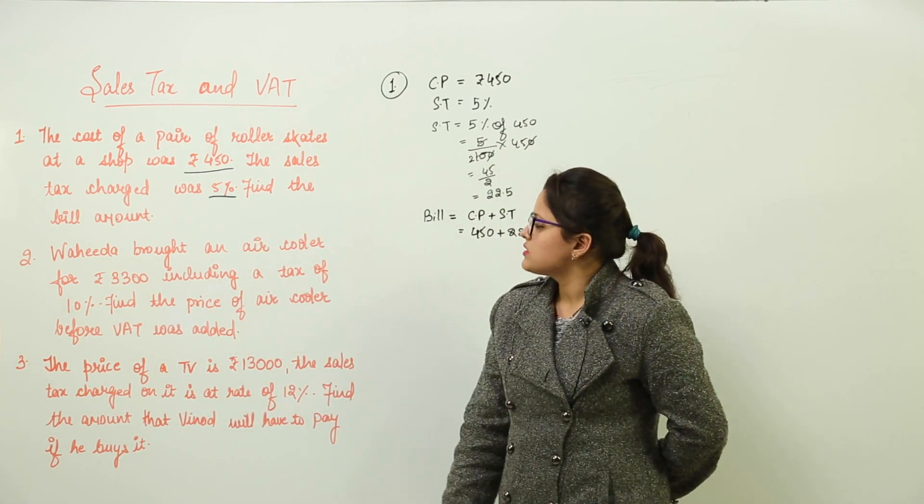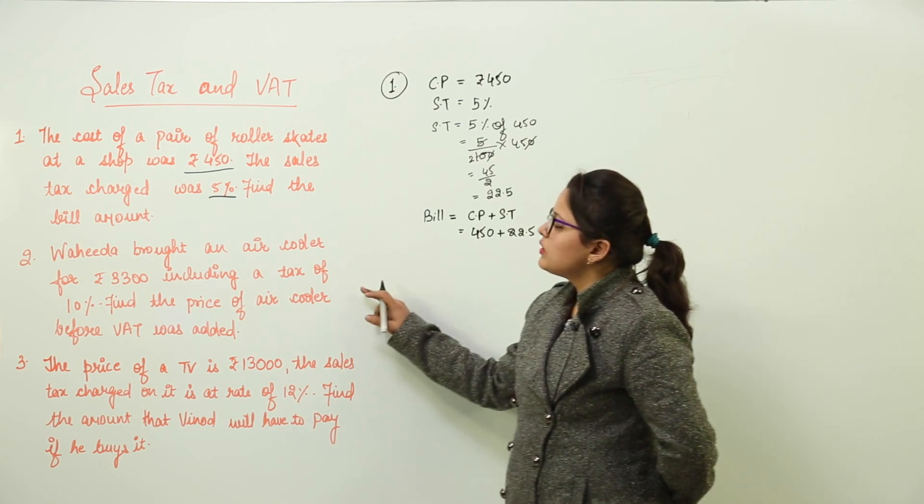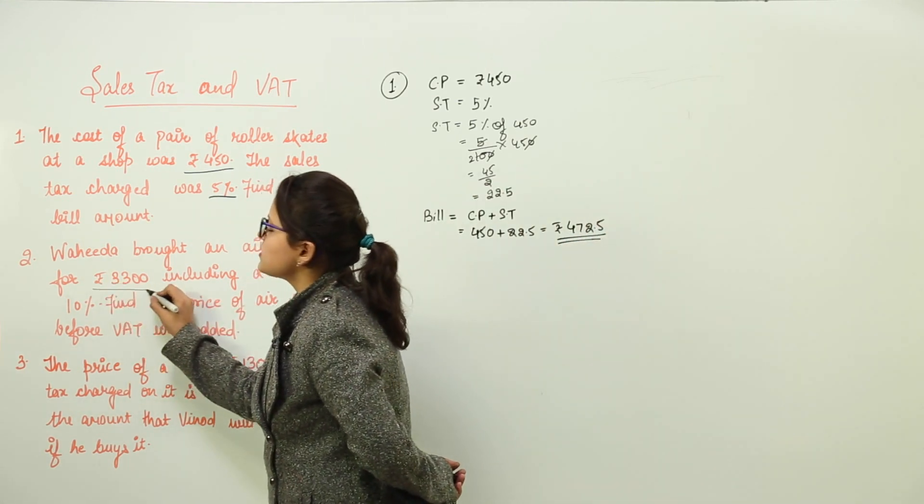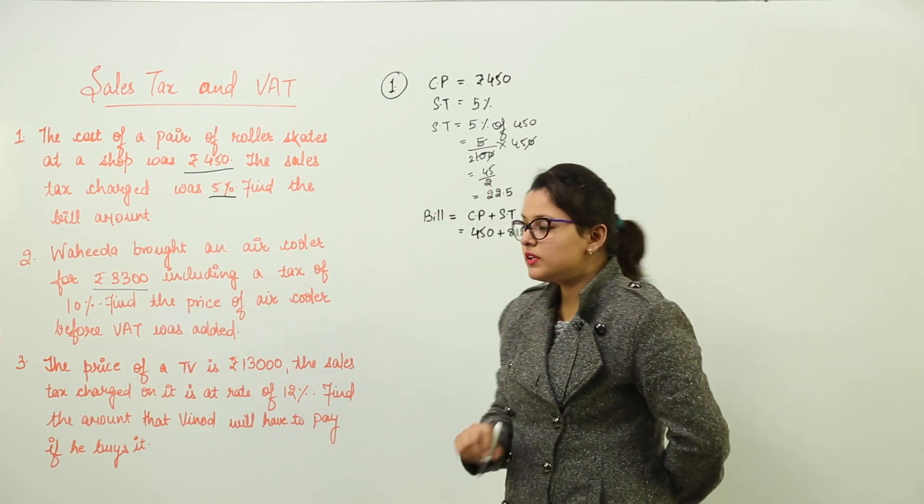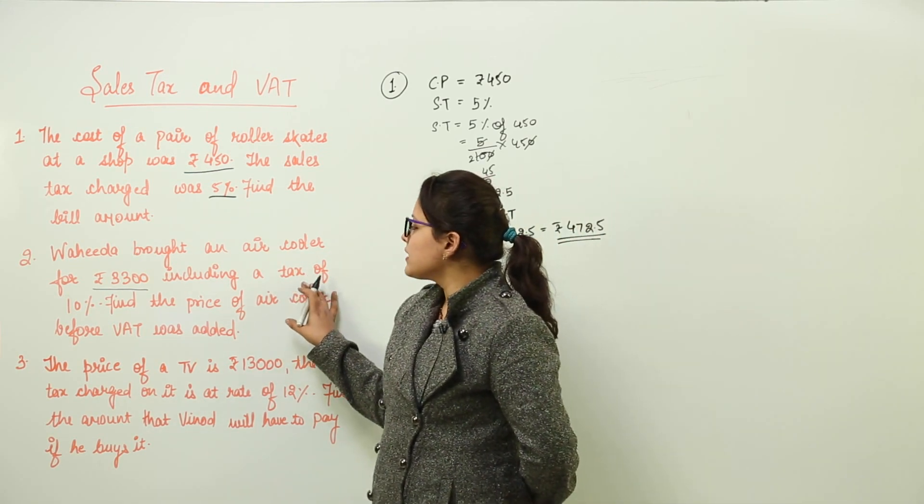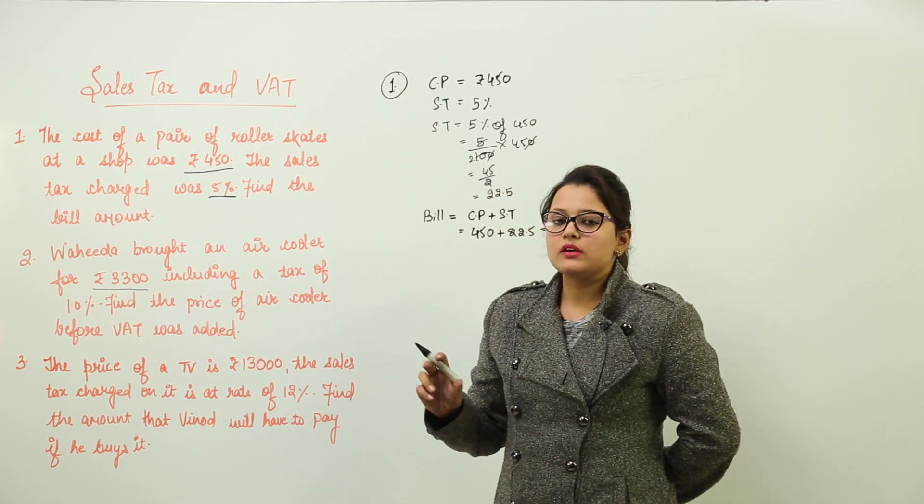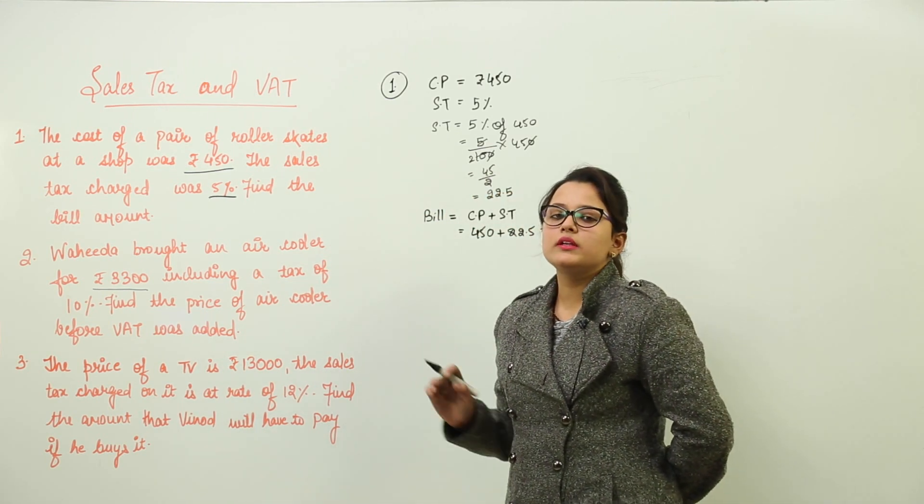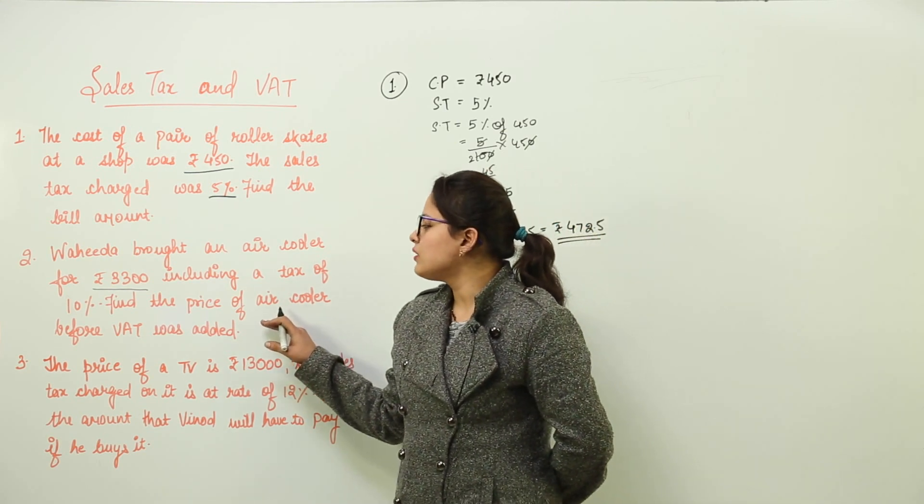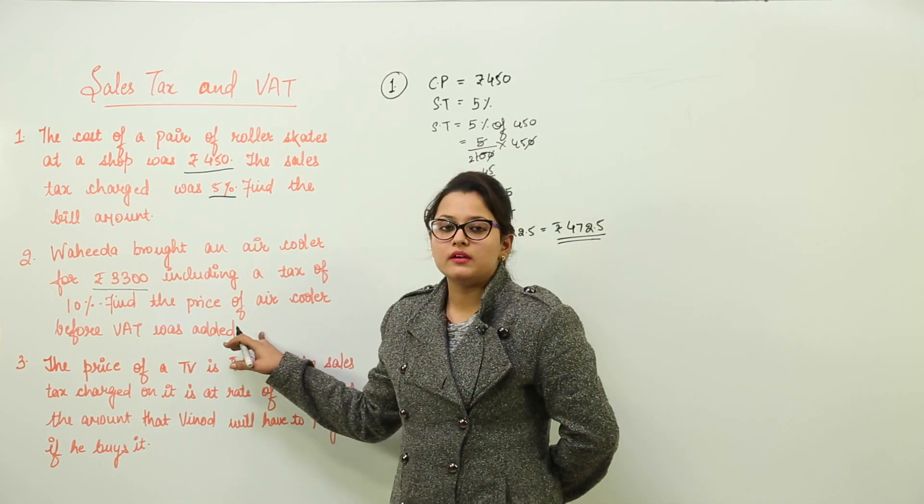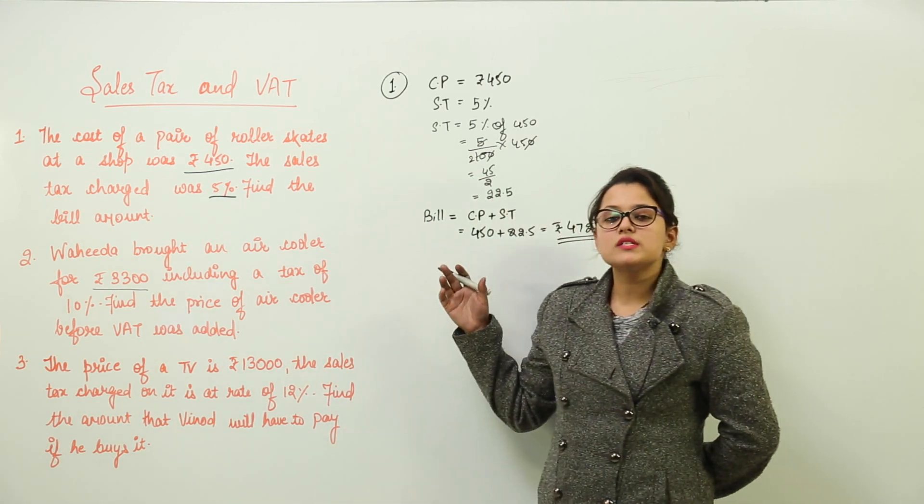Now the next question: Vahida bought an air cooler for ₹3,300. That means the cost price of the cooler is ₹3,300 including a tax of 10%. Now the tax that was to be applied is already included in 3,300. Find the price of the air cooler before VAT was added.